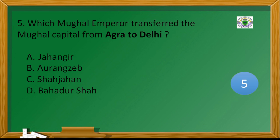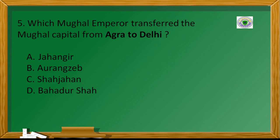Which Mughal emperor transferred the Mughal capital from Agra to Delhi? Answer C: Shah Jahan.